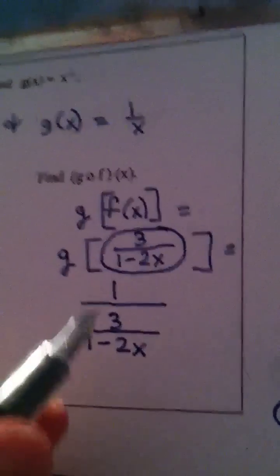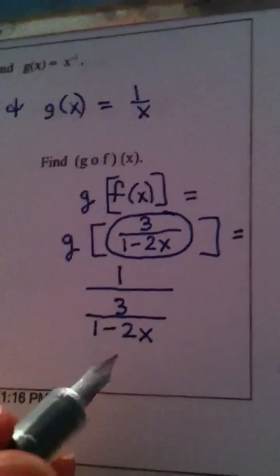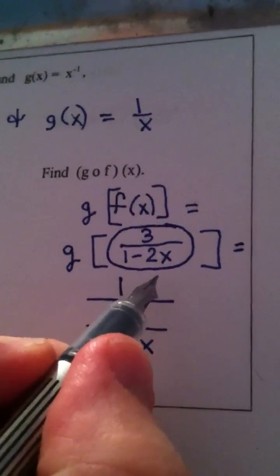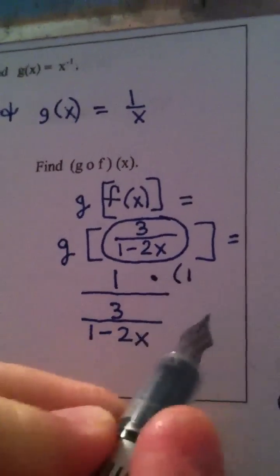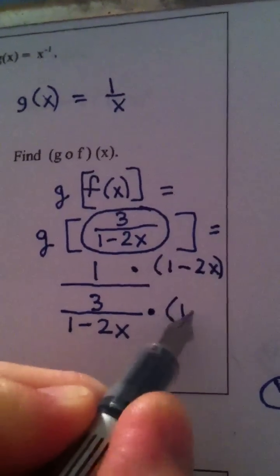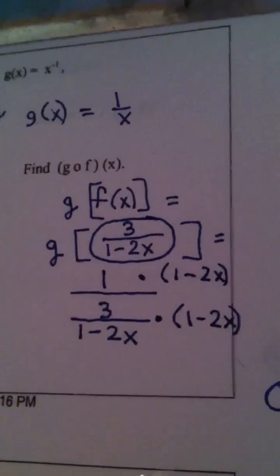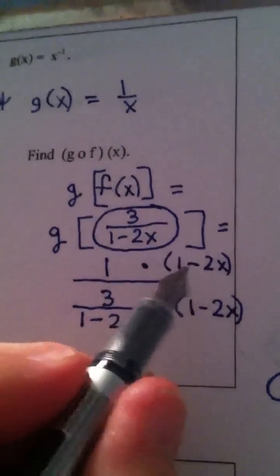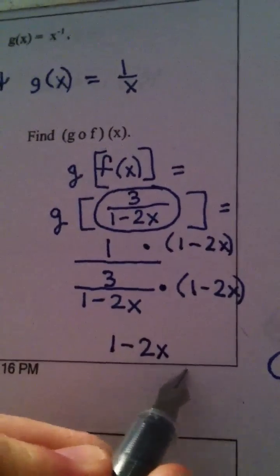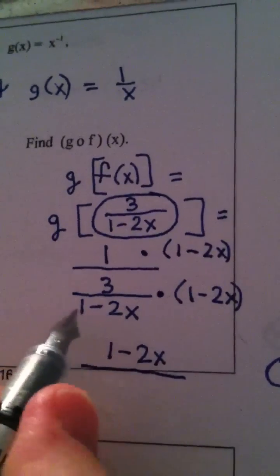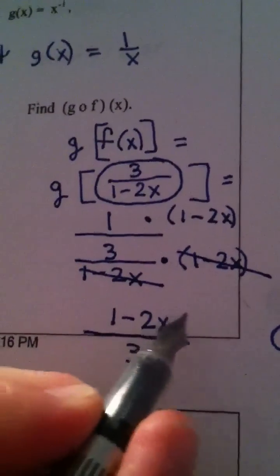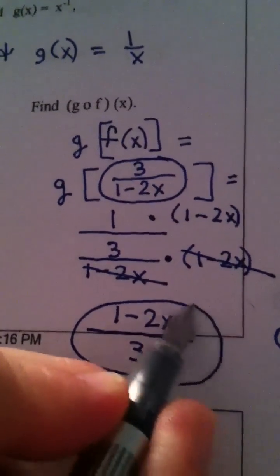Now I have a complex fraction, and I look for the LCD, which in this case would be 1 minus 2x. And I multiply the top by it and also multiply the bottom by it. On top, 1 times 1 minus 2x is 1 minus 2x. In the denominator, the 1 minus 2x cancels, and we're left with 3. And that is my answer.